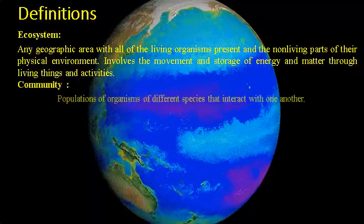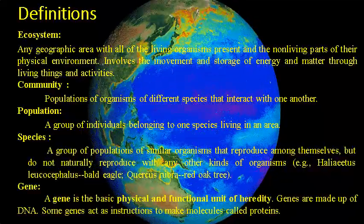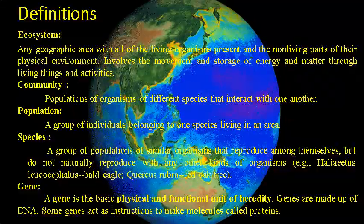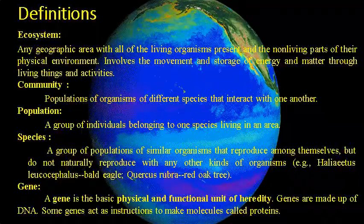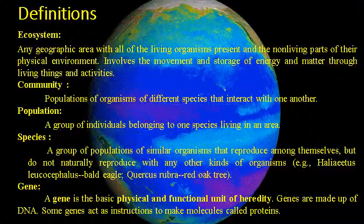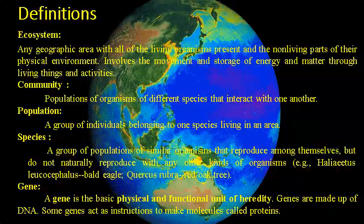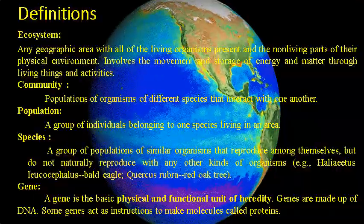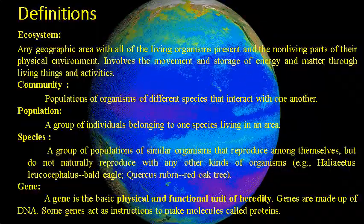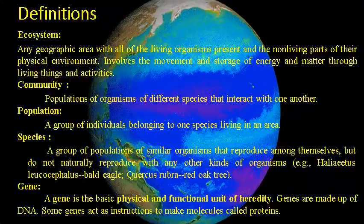Before we begin, let's learn some of the terms before we understand the act. Ecosystem: any geographic area with all of the living organisms present and non-living parts of their physical environment, involves the movement and storage of the energy and matter through living things and activities. That means ecosystem is a large community of living organisms — plants, animals and microbes in any area. In a particular ecosystem, living and non-living physical components are linked together through the nutrient cycles and energy flows. Ecosystem could be of any size; it may cover a large area such as a whole forest or a very small area like a pond, but usually they are in particular places.